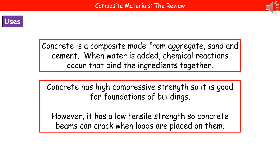We can also use composite materials in building work. One of the mainstays of the building industry is concrete, which is a composite made from aggregate — small bits of rock — sand and cement. When we add water to it, chemical reactions occur that bind those ingredients together to make something very strong.